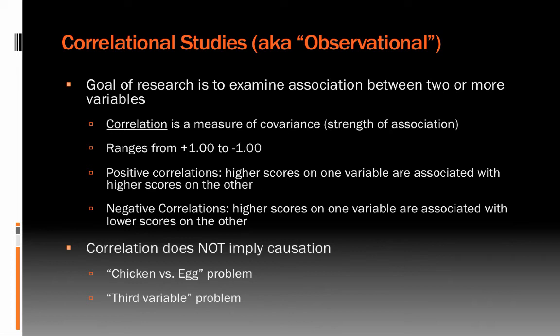One important point is that correlation does not imply causation — a confusion seen frequently in the media. One reason is the chicken-versus-the-egg problem: we don't know which comes first. We don't know whether active people want to eat a better diet, or whether eating well gives people more energy to be active. There's also always the third variable problem — two variables may be correlated not because they are directly related, but because both are associated with some third variable, like a personality characteristic.